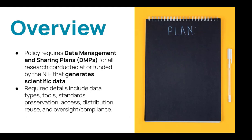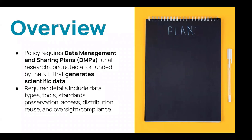The NIH version of the policy has a few required areas that the plan needs to cover. These include data types, tools and code, data standards, preservation, access and distribution guidelines, reuse and oversight, and compliance policies. It really emphasizes the importance of good data management, and it pushes forward the idea that NIH data needs to be shared more often than not, within the limitations of ethics and the law.